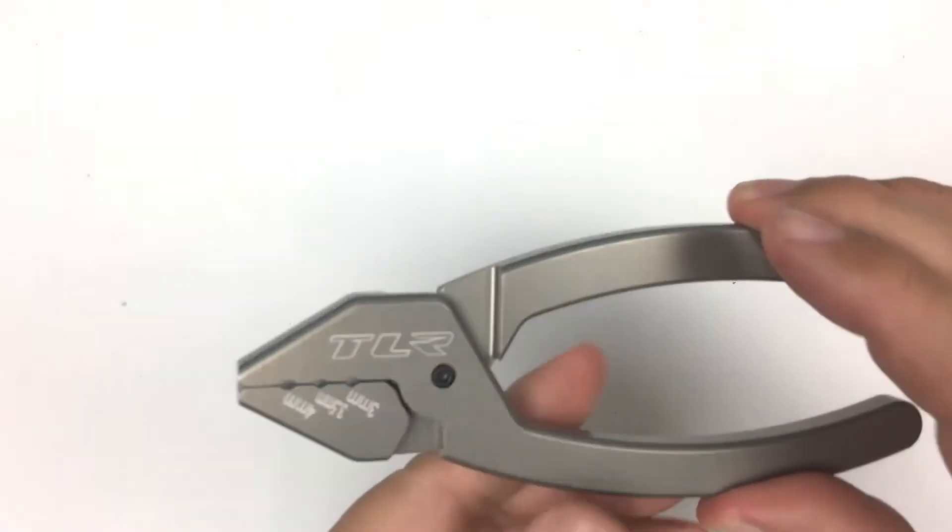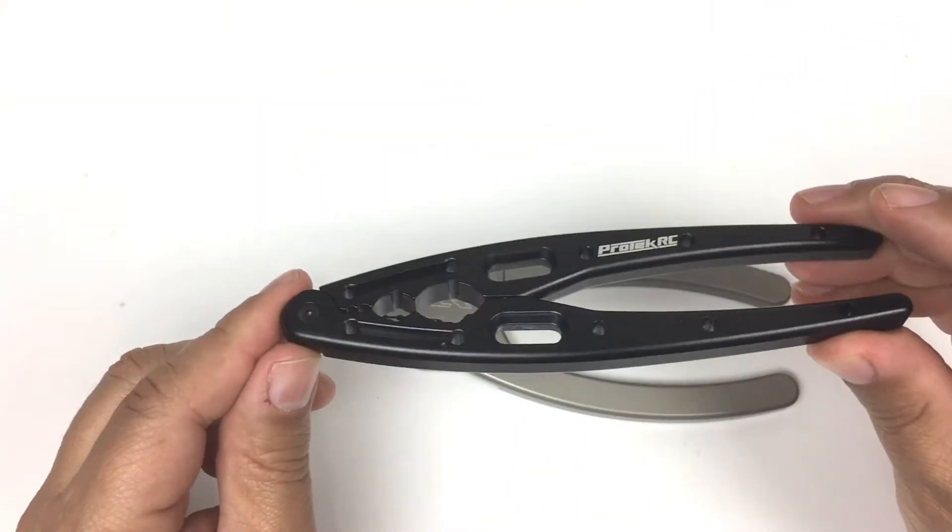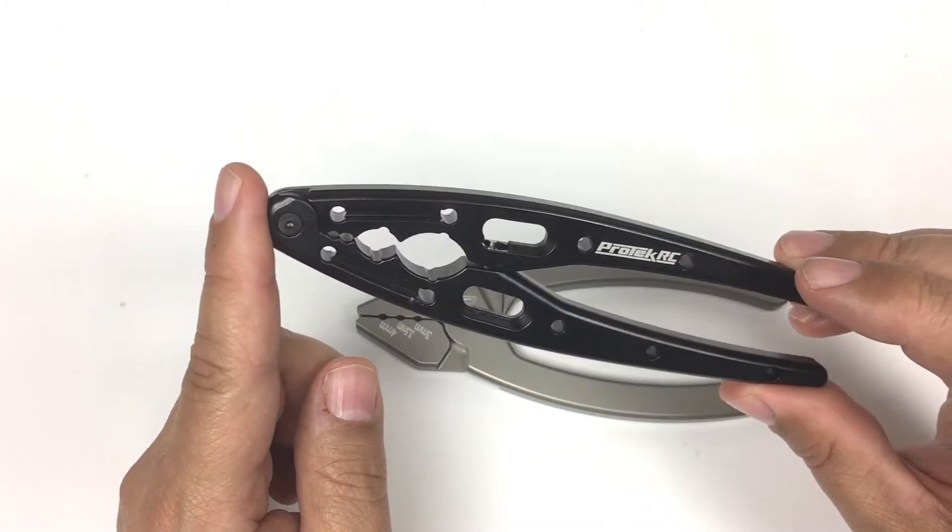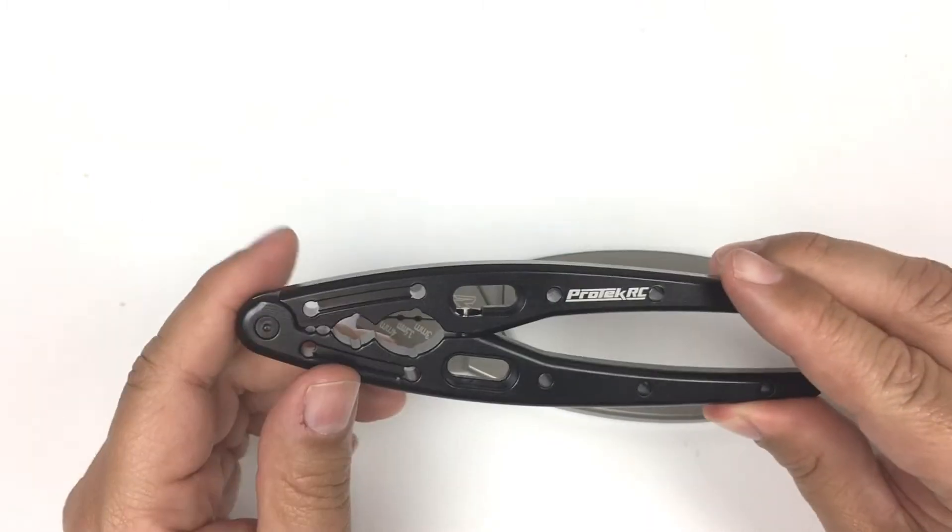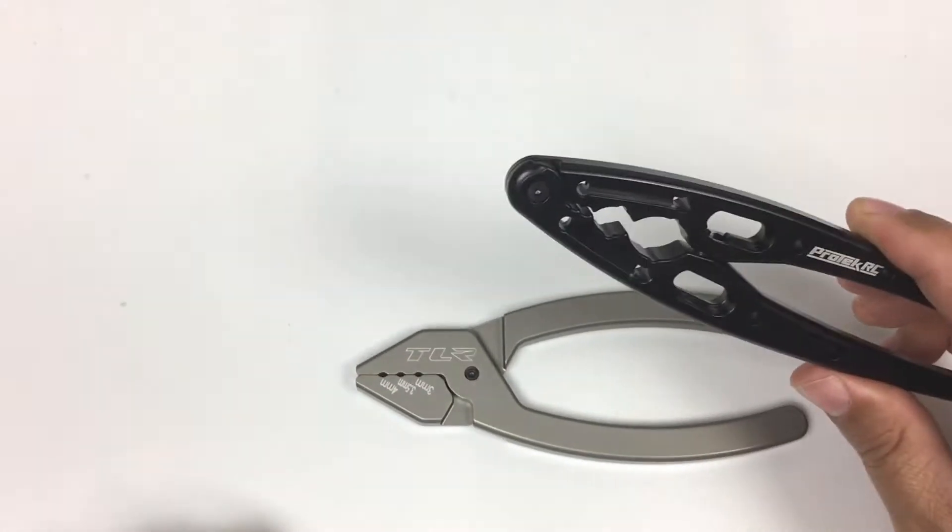So what you want to do is get shock shaft pliers like these from TLR or these from Protech. These are aluminum, and the aluminum is softer than the steel shaft, so you can grip it tightly without worrying that you're going to mar the shaft. These both work equally well. They're nice tools.